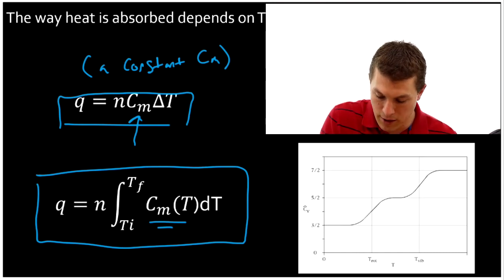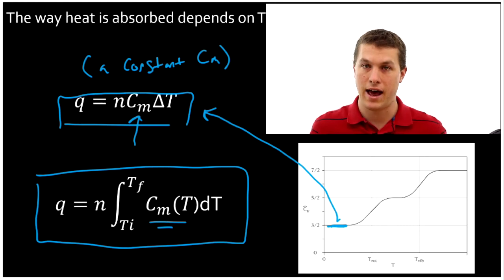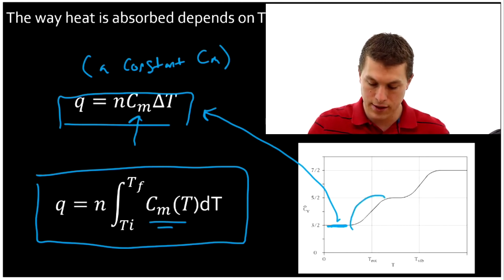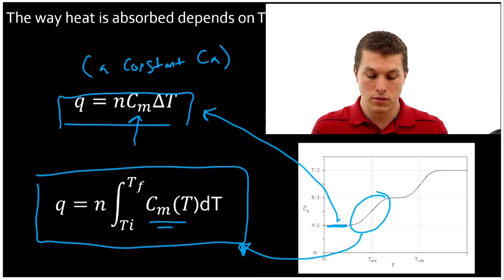So this top equation is decent if our heat capacity is constant over the temperature range we're interested in. In other words, if I'm looking right here, I can use the top equation because our heat capacity doesn't change much. It stays at three halves. On the other hand, if I'm looking at this region where it's changing a lot, I definitely need to use this guy, because there our heat capacity is most certainly changing and a function of temperature. In general, the bottom equation is always going to give you the right answer. That's the more general correct equation.